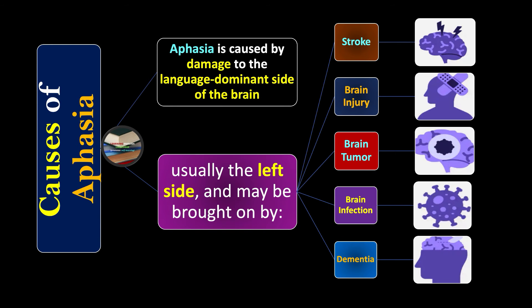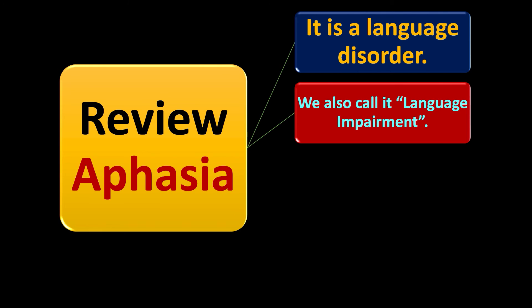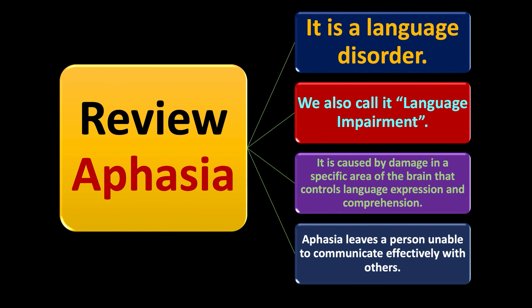To review: aphasia is a language disorder, also called language impairment. It is caused by damage in a specific area of the brain that controls language expression and comprehension. Aphasia leaves a person unable to communicate effectively with others.